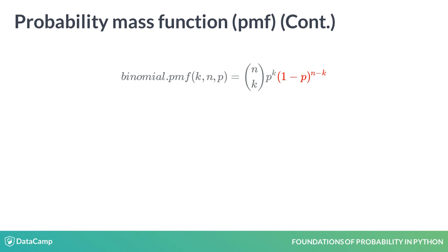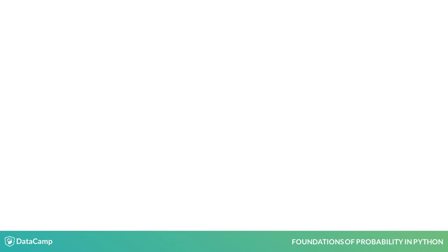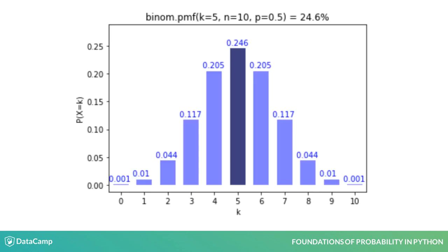It's okay if you don't understand the formula right now. With practice, your intuition about this will grow. If we plot the probability mass function of getting k heads out of 10 fair coin flips, you can see that 5 is the most likely outcome.